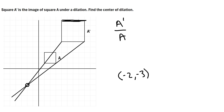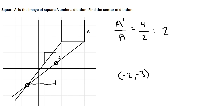If we pick the top side of A', its length is four. The length of the corresponding side in figure A is two. So the scale factor is four over two, which is two. In other words, we multiply the sides of square A by two to get A'. To use that for verification, we go from the center of dilation at (-2, -3) to the bottom right corner of A. That's five to the right and four up. Since the scale factor is two, we should have to go twice the distance — ten to the right and eight up — to reach the same corner of A'.